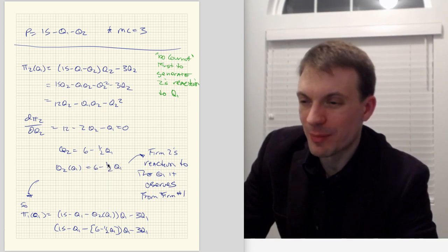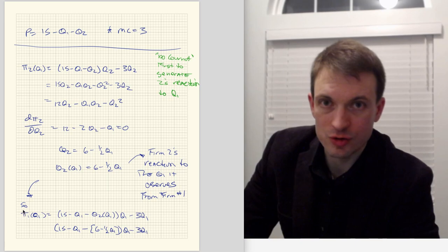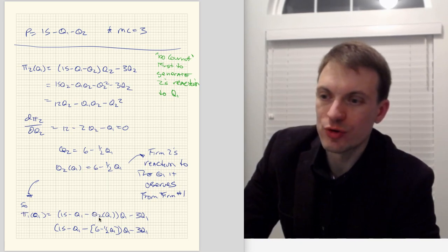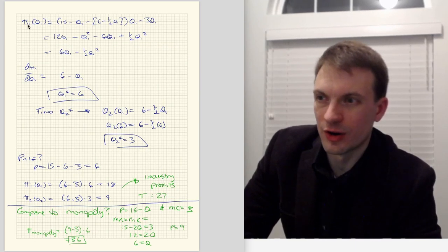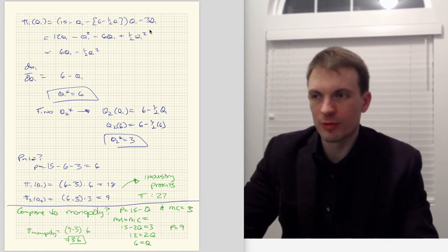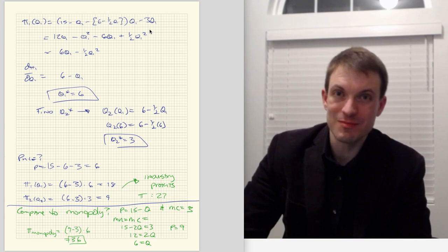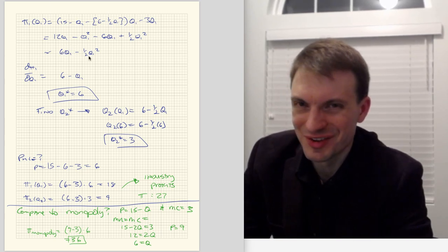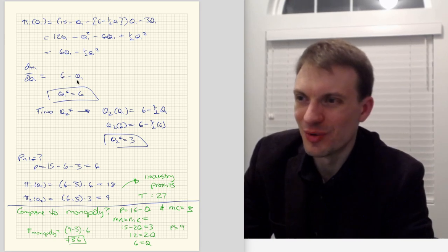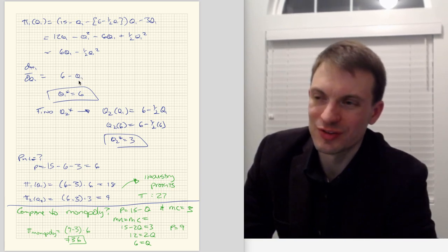So I've got Pi1 of Q1 — Firm 1's profit maximization problem — where they choose their optimal quantity knowing that Firm 2 is going to react. I'm going to rewrite this with Firm 2's reaction function built in and clean up the algebra. What starts off looking pretty messy simplifies down to 6Q1 minus one-half Q1 squared. Taking the derivative gives 6 minus Q1, because 2 times one-half is just 1. Setting equal to zero tells us Firm 1's optimal quantity is 6.